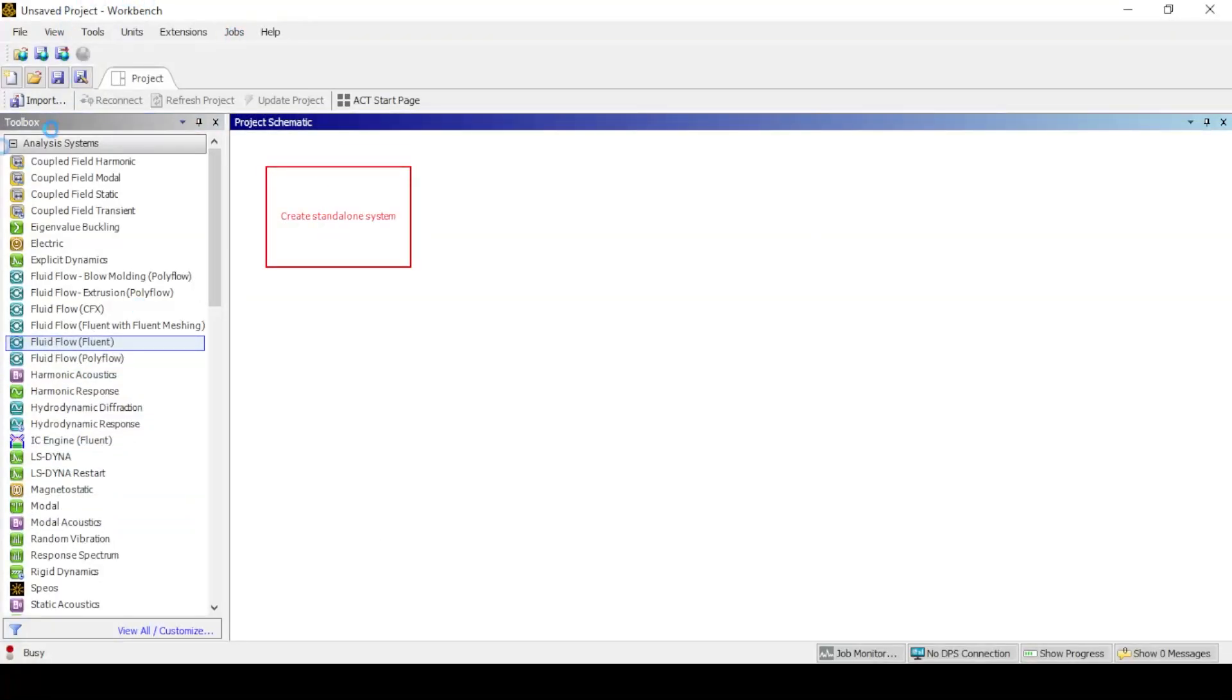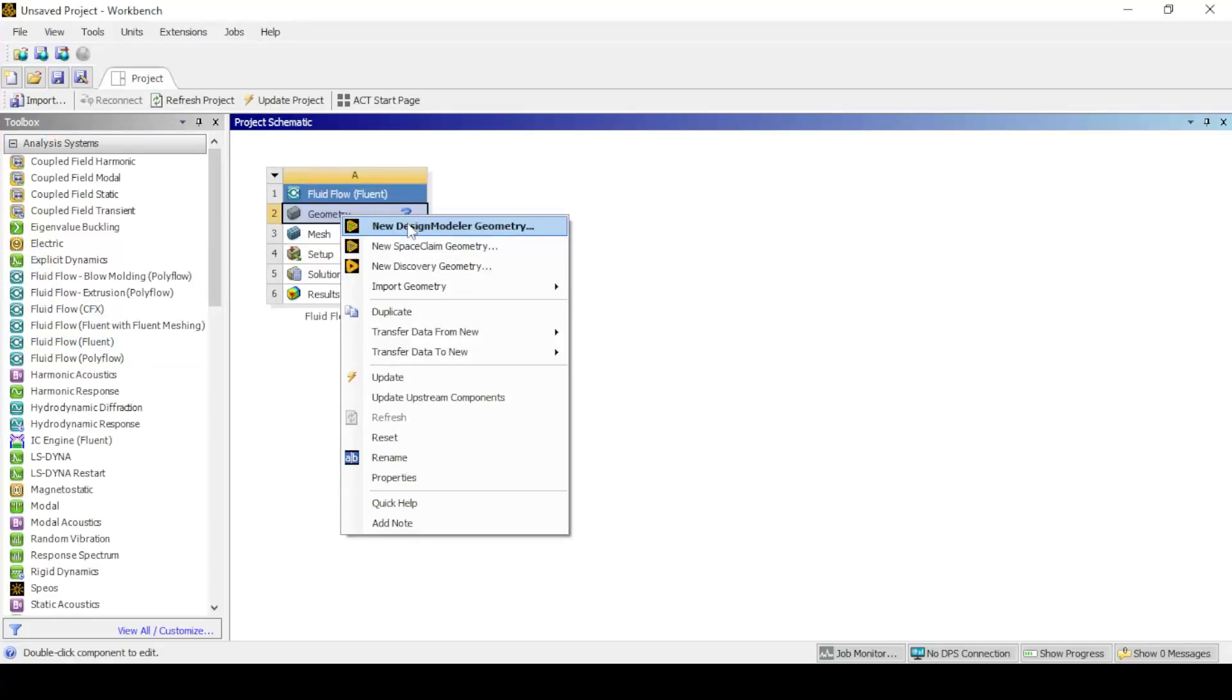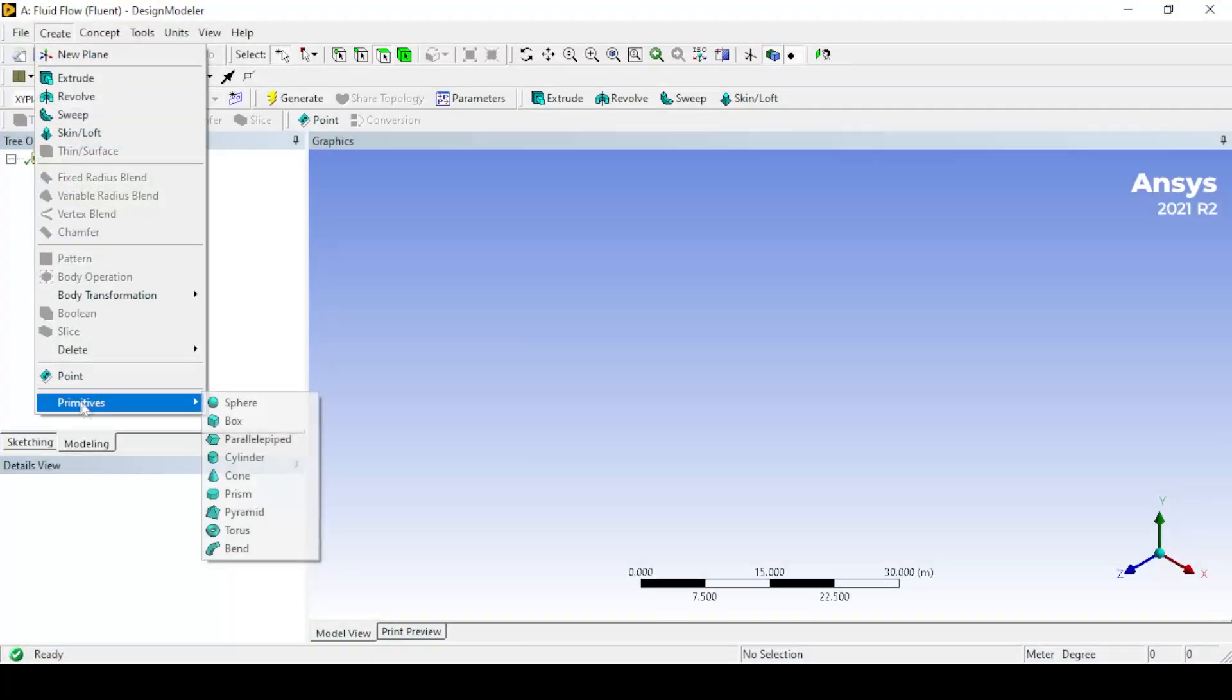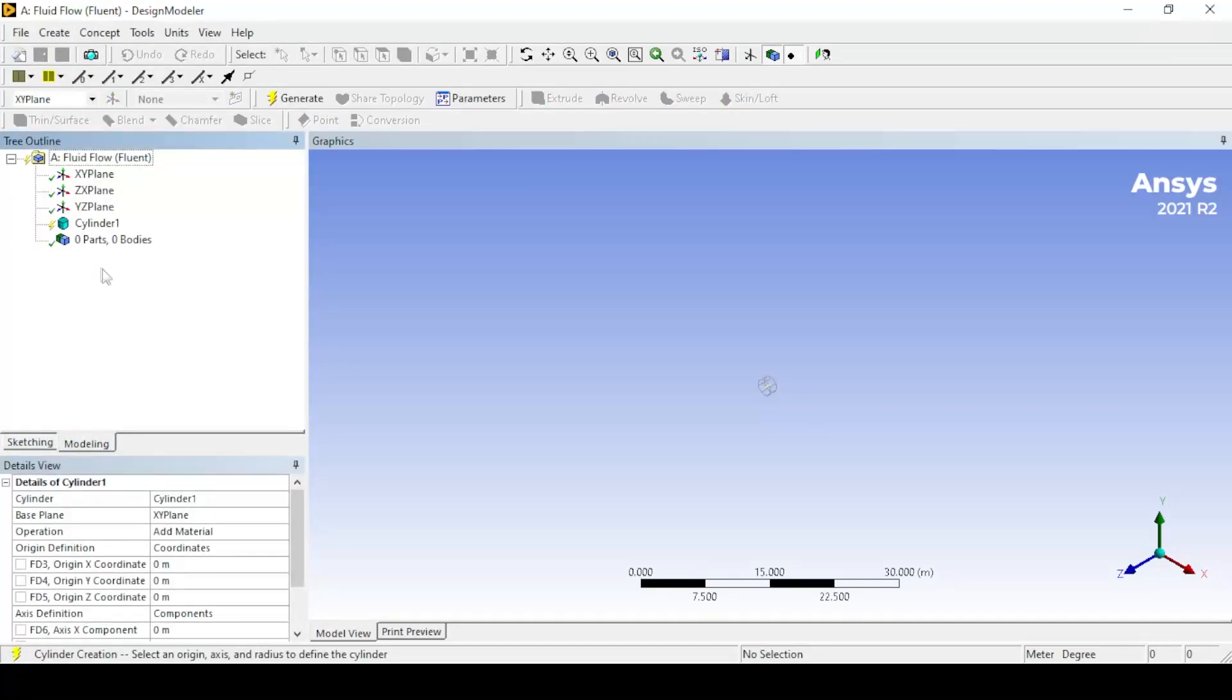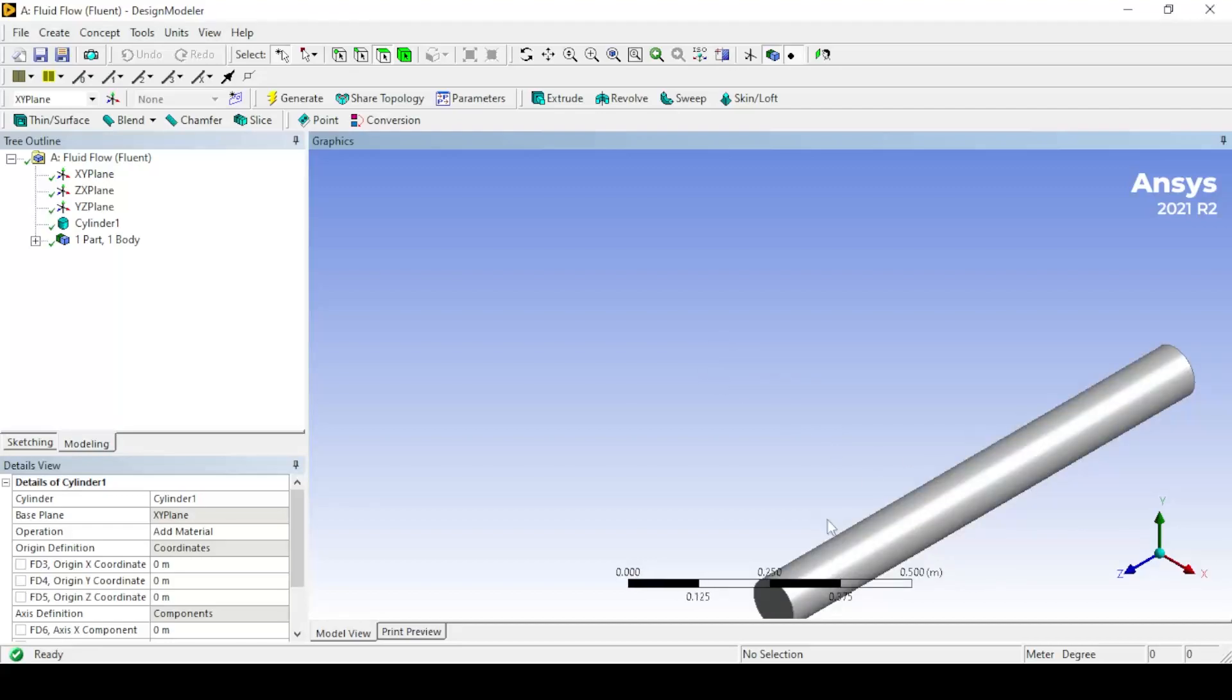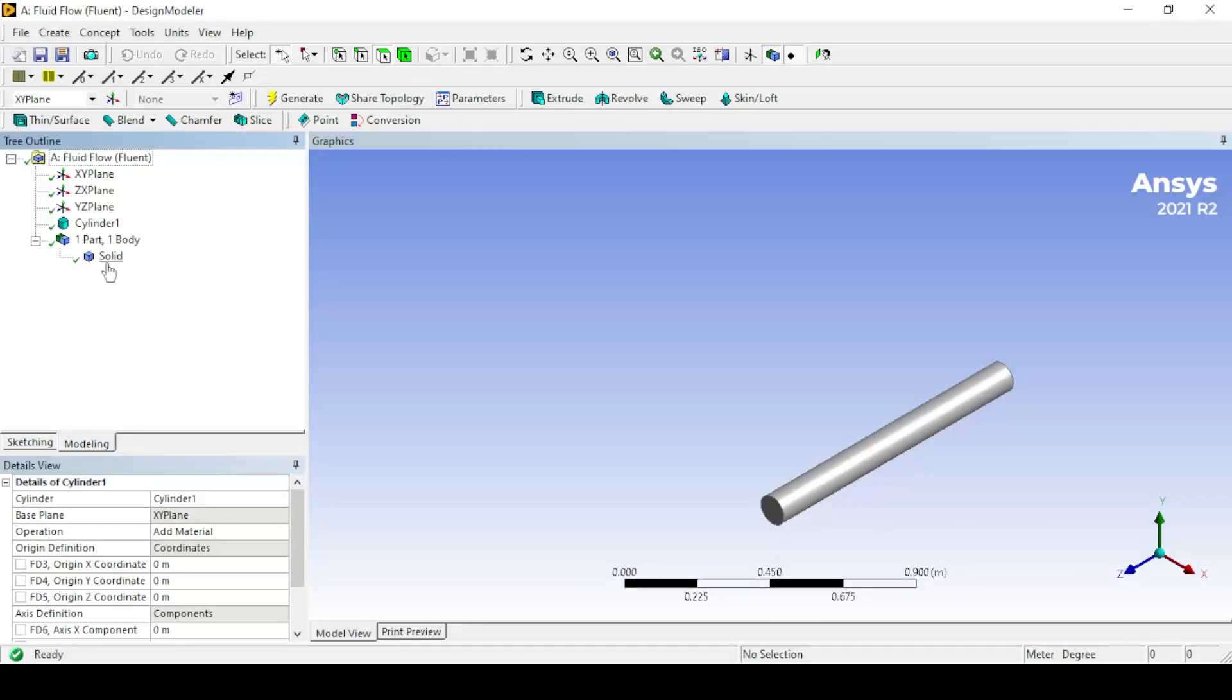First, drag-and-drop fluid in the project, open design modeler, create cylinder in XY plane with given dimensions. Change solid to fluid.